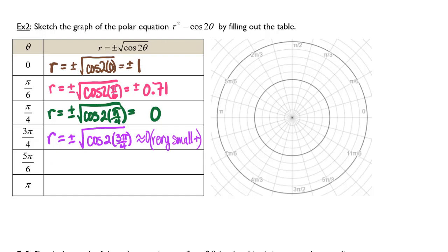And then the next one we'll check is 5 pi over 6, which will give me a substituted value. r is equal to plus or minus the square root of cosine of 2 times 5 pi over 6, which is equal to plus or minus 0.71.